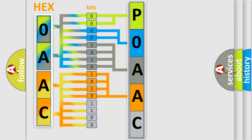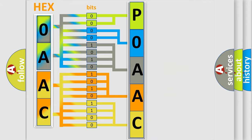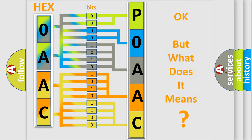A single byte conceals 256 possible combinations. We now know in what way the diagnostic tool translates the received information into a more comprehensible format. The number itself does not make sense to us if we cannot assign information about what it actually expresses.